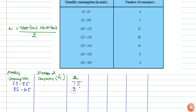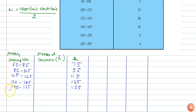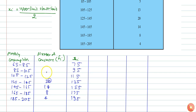Similarly, 85 to 105 will be 95. For 125 to 145 this will be 135, 145 to 165 this will be 155, 165 to 185 xi will be 175, and 185 to 205 this will be 195. The corresponding frequencies are 8, 14, 20, 13, 5 and 4.